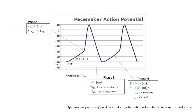Phase 4 occurs first, and this is where we have a slow influx of sodium ions via funny current channels. These funny current channels slowly begin to push the membrane potential up to the action potential threshold.